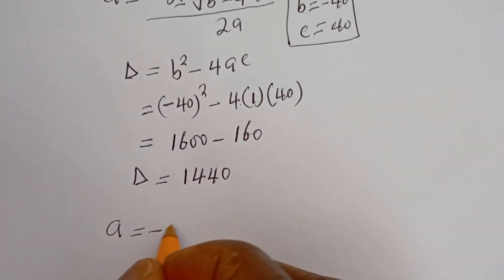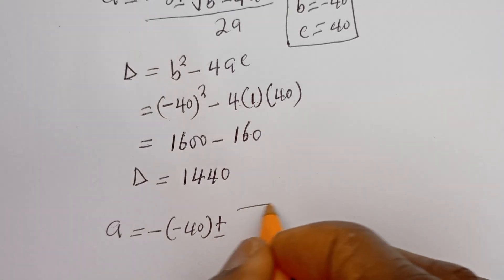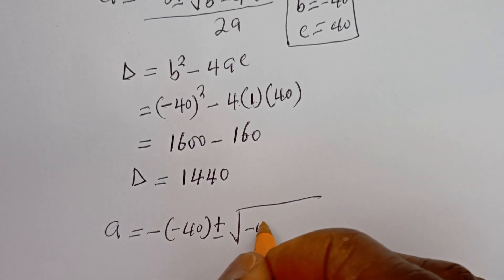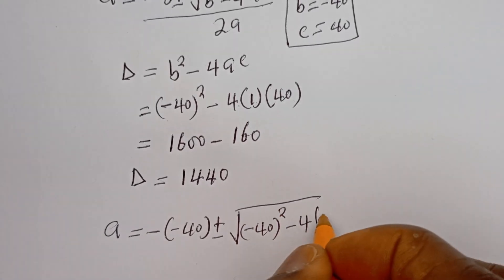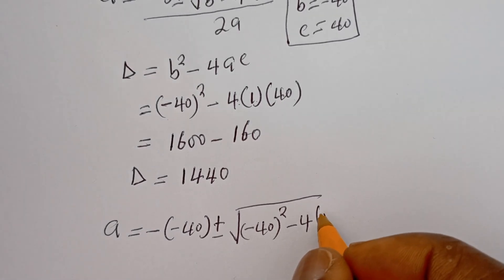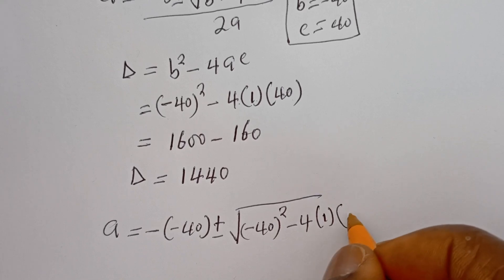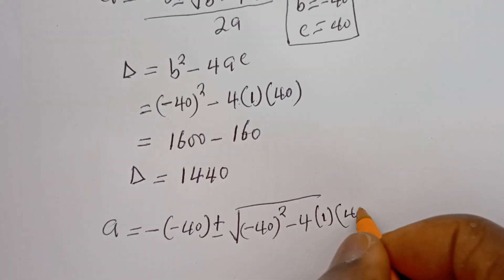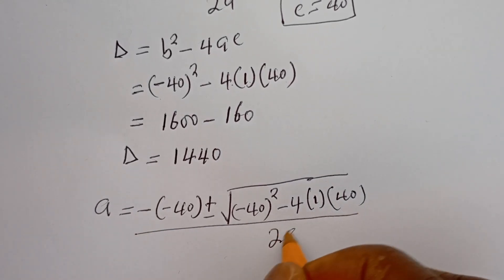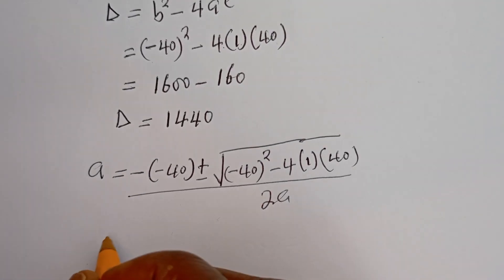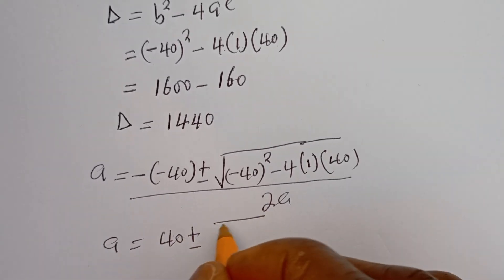Substituting back into the formula: A equals negative (minus 40) plus or minus square root of (minus 40) squared minus 4 times 1 times 40, all over 2a. This gives A equals 40 plus or minus square root of 1440, over 2.